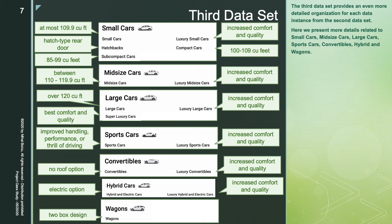The third dataset provides an even more detailed organization for each data instance from the second dataset. Here we present more details related to small cars, mid-size cars, large cars, sport cars, convertibles, hybrid, and water.